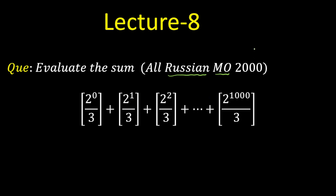This series is made of GIF — that is, the square bracket denotes the Greatest Integer Function. The question is to evaluate the sum of the series: GIF of 2 raised to power 0 divided by 3, plus 2 raised to power 1 divided by 3, and so on, increasing till 2 raised to power 1000 divided by 3. Feel free to pause the video and try the question.